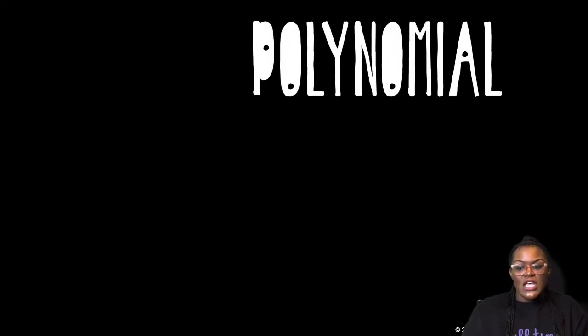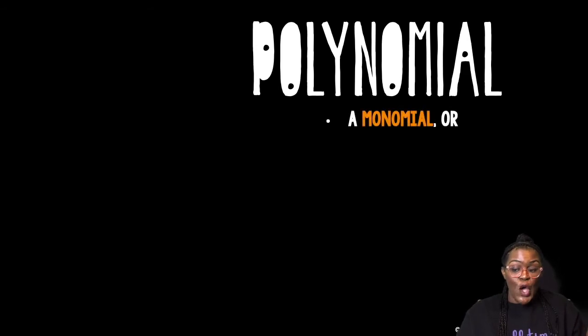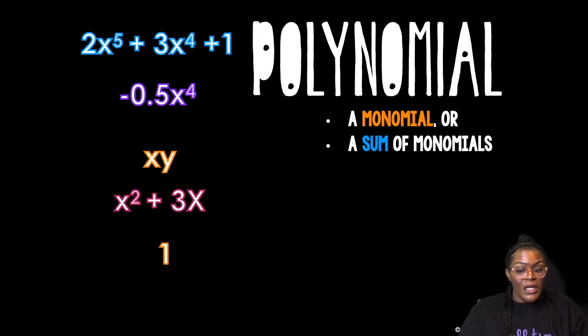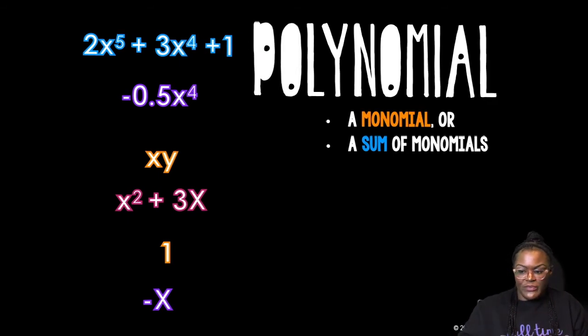Let's talk about polynomials. A polynomial is a monomial or the sum of monomials. These are examples of what that might look like. A polynomial is a monomial, so it could be a single term. Or it is the sum of monomials, which means a bunch of monomials separated by plus signs or minus signs. So those are all examples of polynomials.